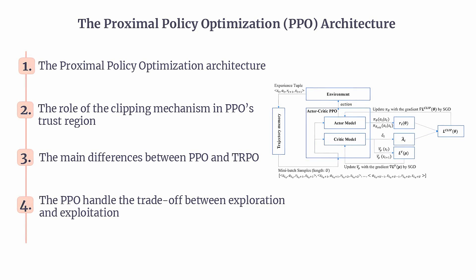Proximal Policy Optimization, PPO, is one of the most widely used algorithms in reinforcement learning. It was designed to improve the stability and performance of earlier policy gradient methods. Think of PPO as striking the perfect balance between simplicity and effectiveness, which is why you'll see it used in fields ranging from robotics to video games.